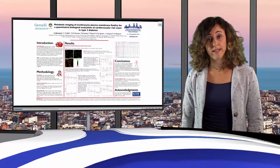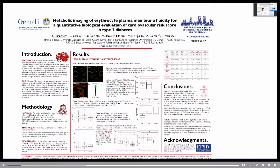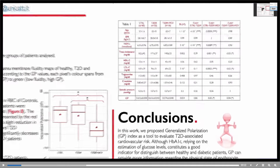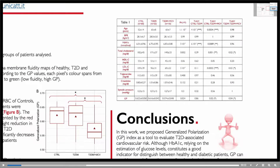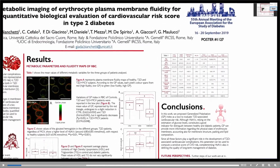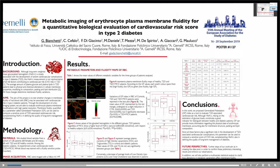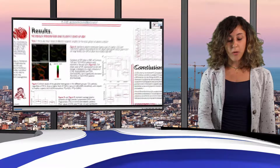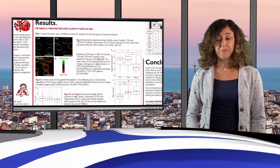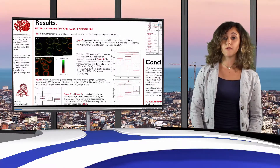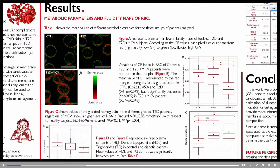Now let's move to our results. In Table 1, we summarized some metabolic parameters of interest, especially plasma lipid levels, glycated hemoglobin, and Generalized Polarization. The first interesting observation regards variations in the GP index, which can be seen both from the pixel-resolved fluidity maps of red blood cells in Figure A and from the box plot in Figure B.